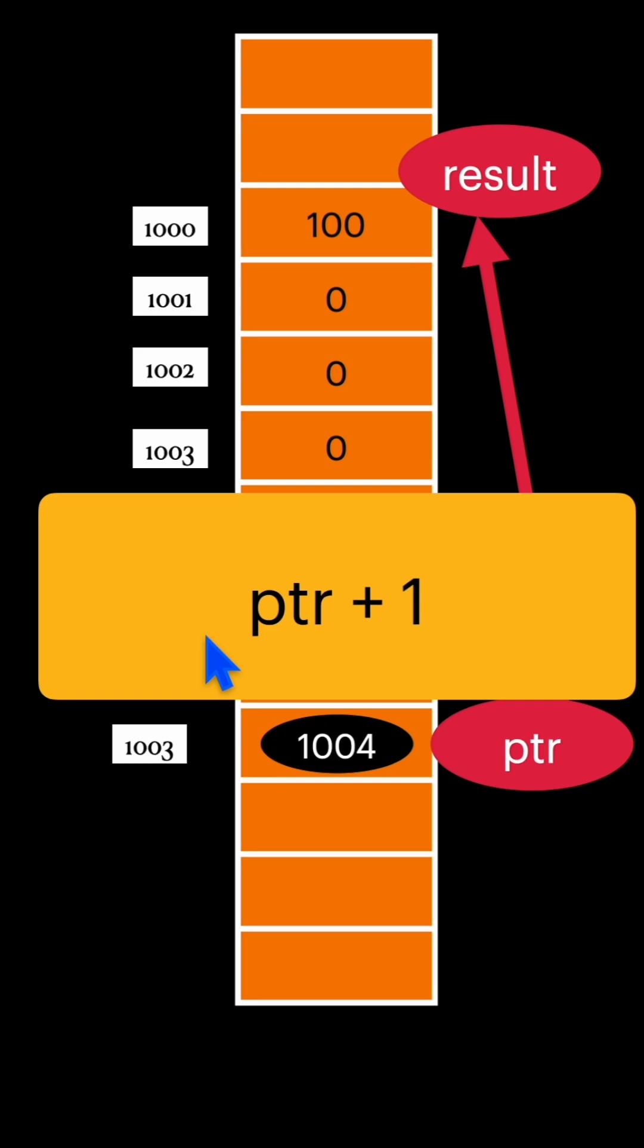Either it is a structure, union, unsigned short, character, anything. If you just increment the pointer by one, it will give you the size of the variable.